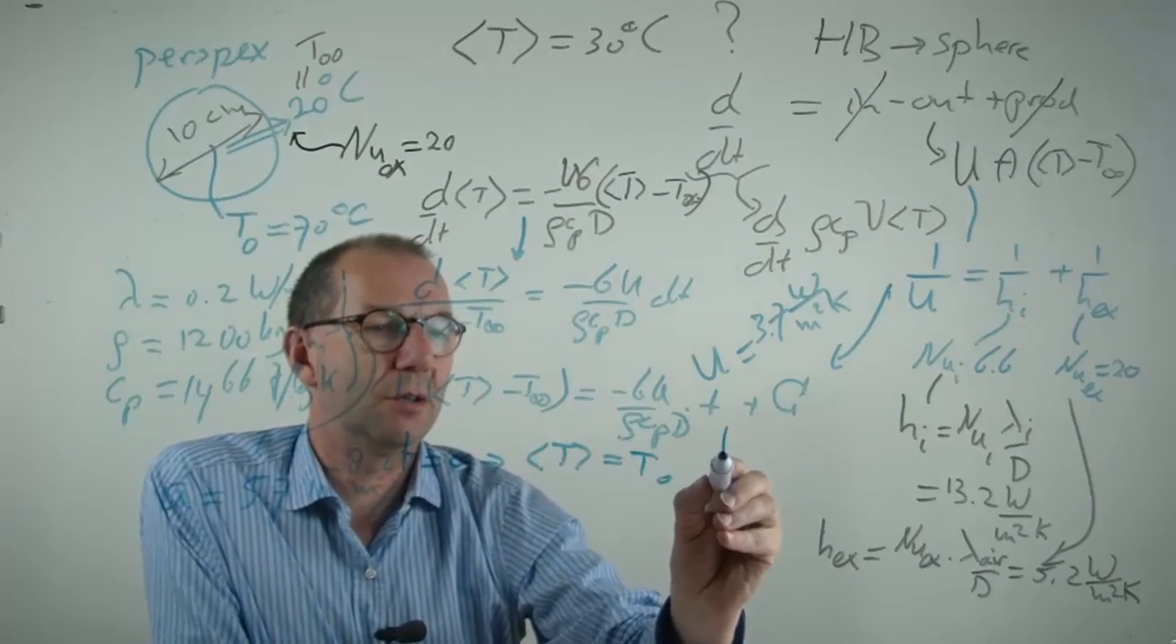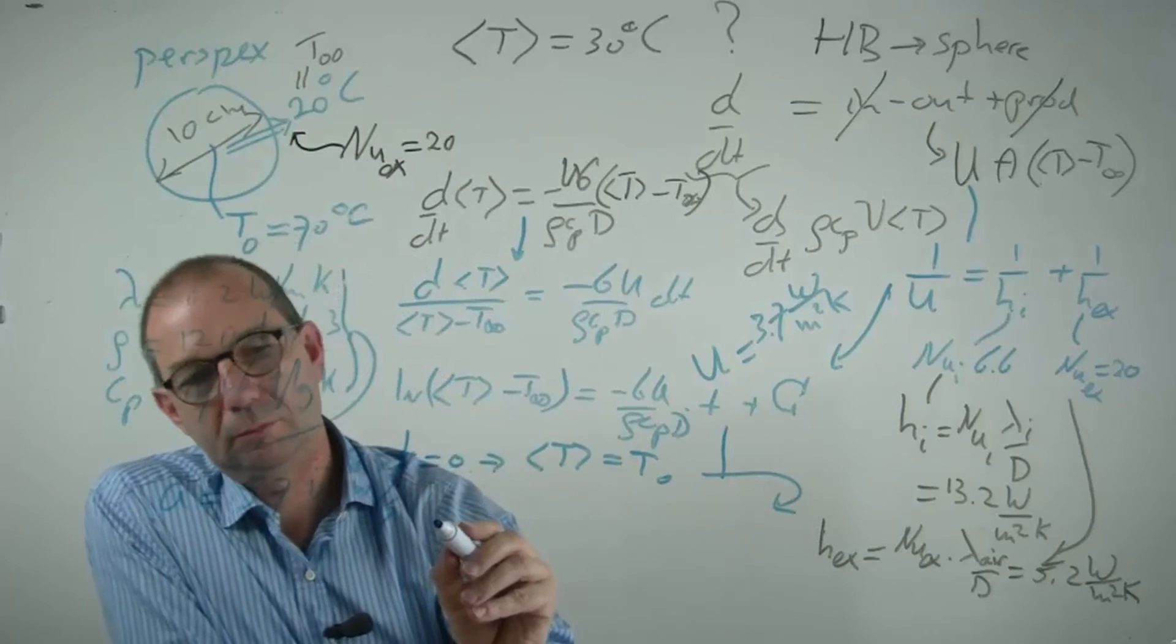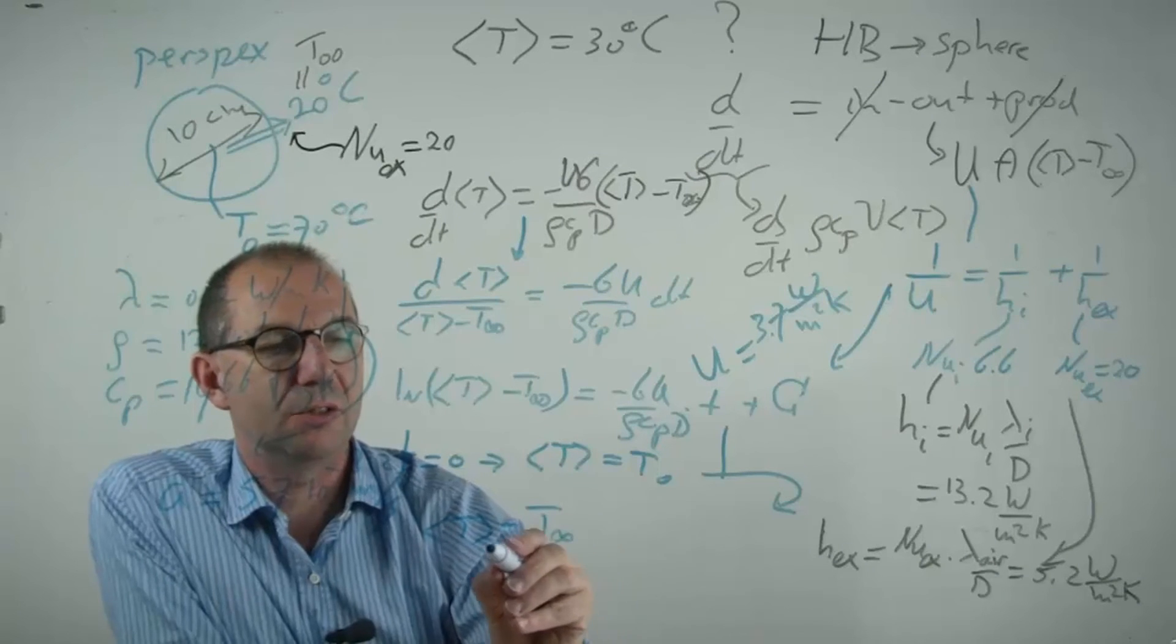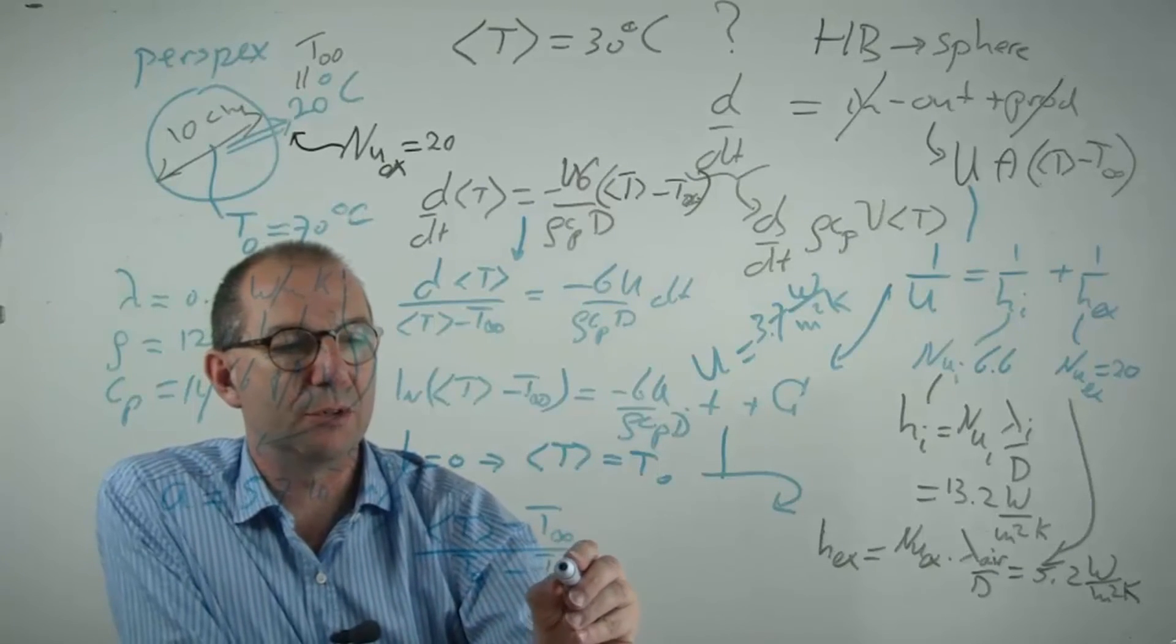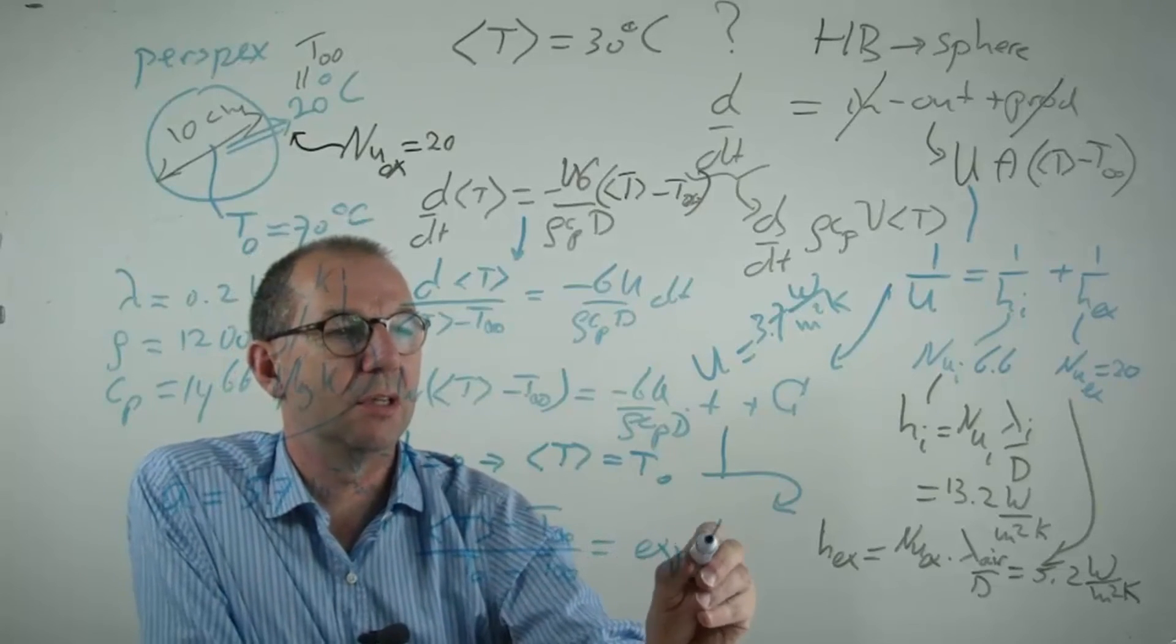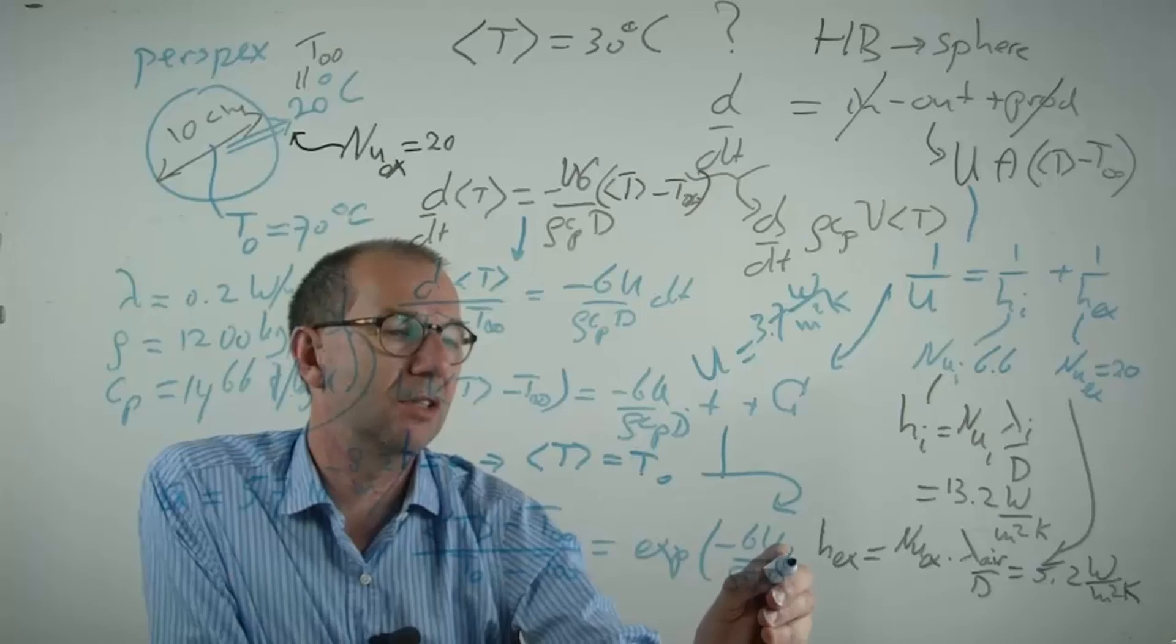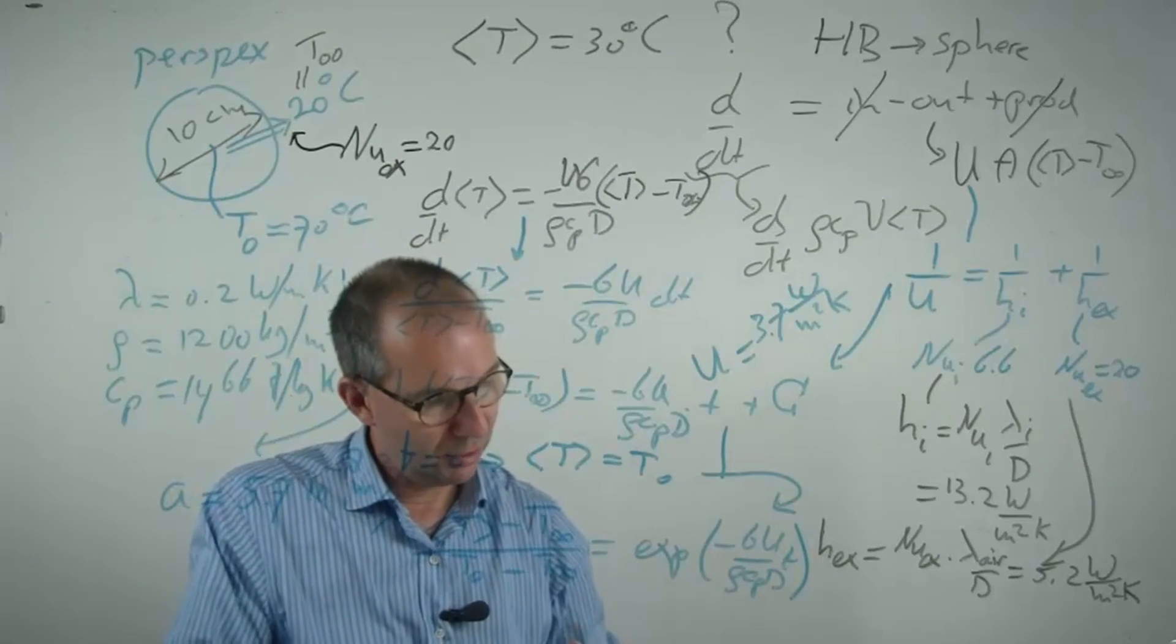And thus I can get my solution as the average temperature minus the temperature far away over the initial temperature minus the temperature far away is the exponent of minus 6U over ρ, Cp, D times t. Just fits. I got my general expression.